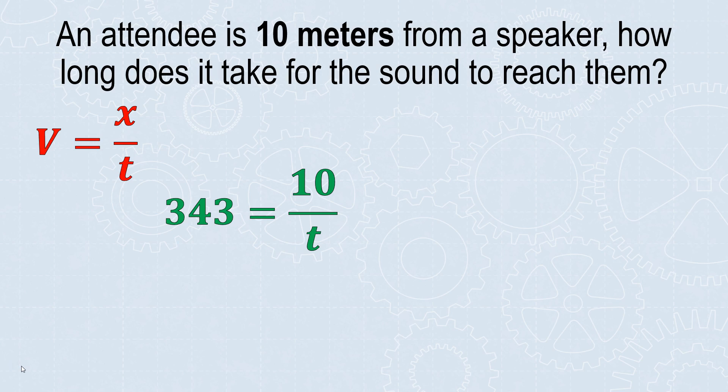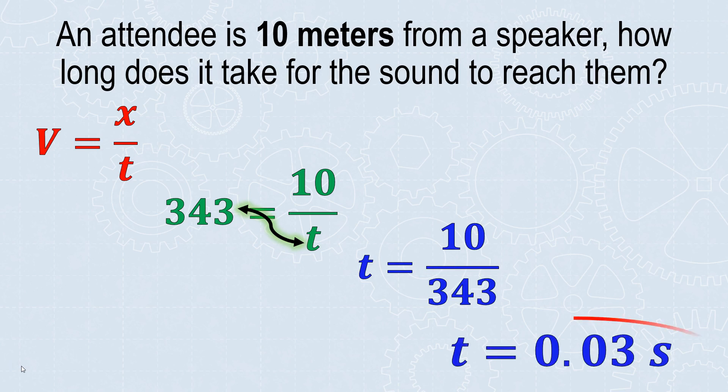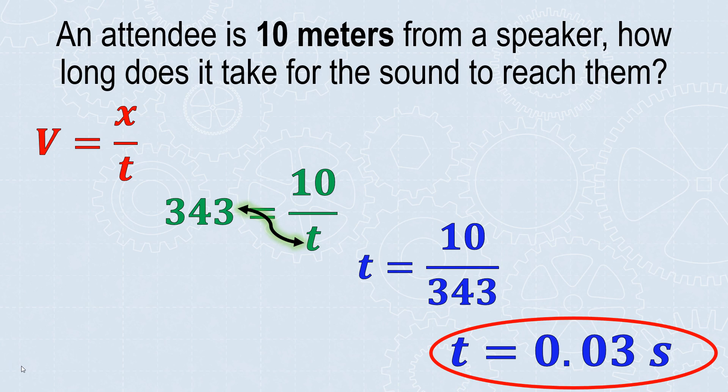When I have a variable in the denominator, there's a shortcut. You can do cross multiplication, or switch the variable and the value that's by itself. So t = 10/343. That gives a very short time - 0.029 seconds. 10 meters is not a huge distance and sound travels pretty quick. Short distance, high velocity means short time.